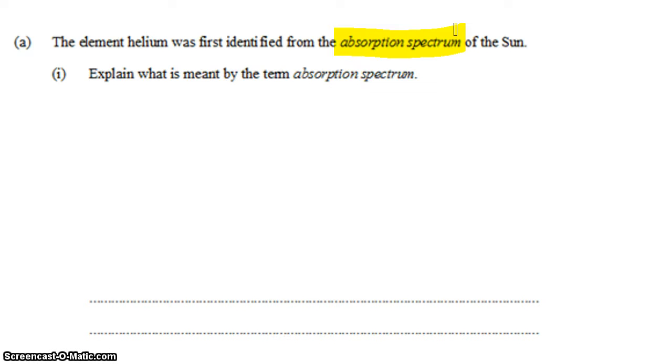So what we're talking about here is what happens when white light passes through something like a gas. So here are some gas molecules, and we're going to pass the full spectrum of white light.